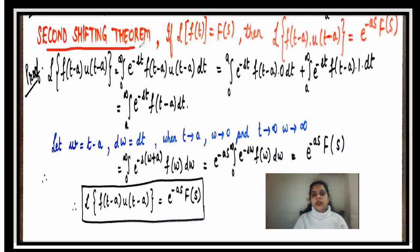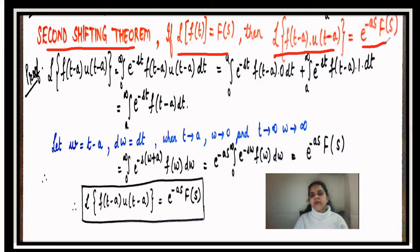The second shifting theorem states that if the Laplace of f(t) is F(s), then the Laplace of f(t - a)·u(t - a) equals e^(-as)·F(s). When a function f(t) takes the form f(t - a) and is multiplied by the unit step function u(t - a), the result is F(s) multiplied by e^(-as).